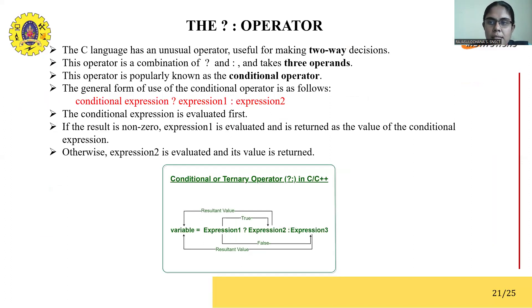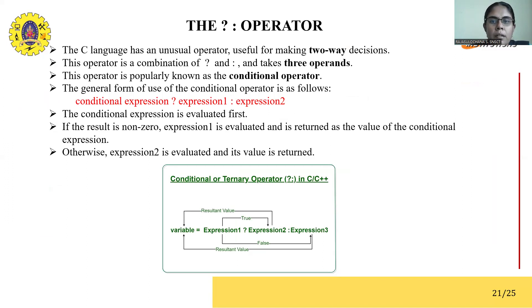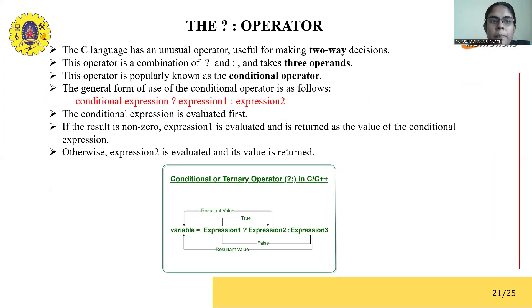Welcome to this lecture series on programming in C and data structures. In today's lecture we will see the conditional operator, which is also called the ternary operator. This operator takes three operands as input, and the question mark followed by colon is called the conditional or ternary operator.